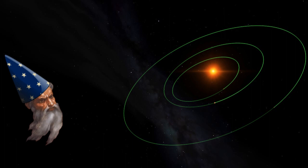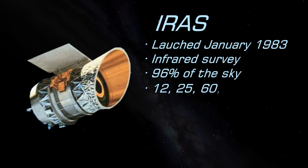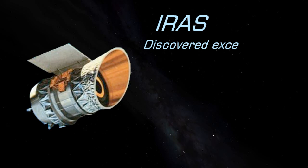The IRAS Infrared Telescope was launched in 1983 on a nine-month mission to map almost the entire sky in infrared from wavelengths of 12 to 100 micrometers. It discovered an excess of infrared light from Vega, Fomalhaut, Epsilon Eridani and Beta Pictoris.